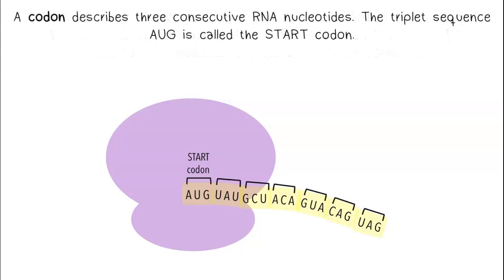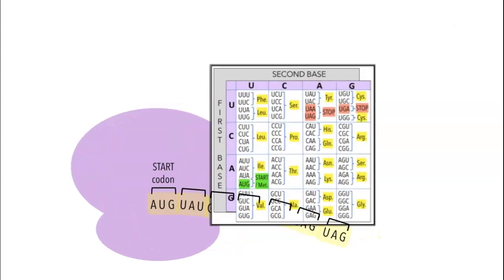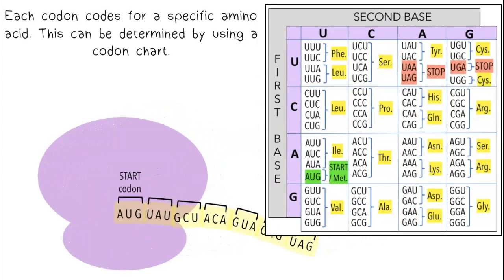A codon describes three consecutive RNA nucleotides. The triplet sequence AUG is called the start codon. Each codon codes for a specific amino acid, which can be determined by using a codon chart.